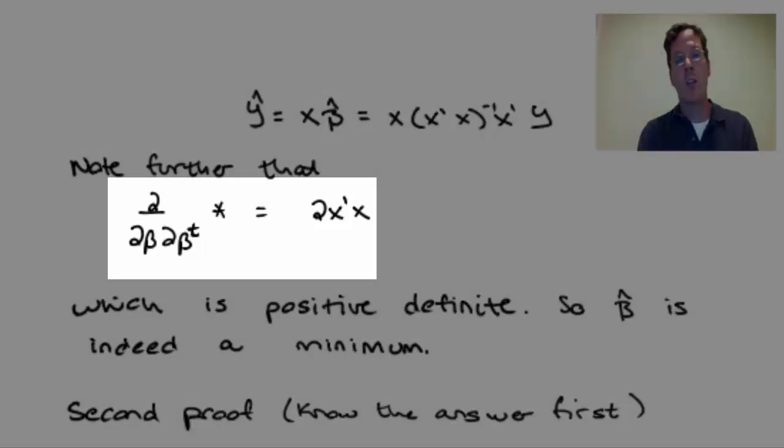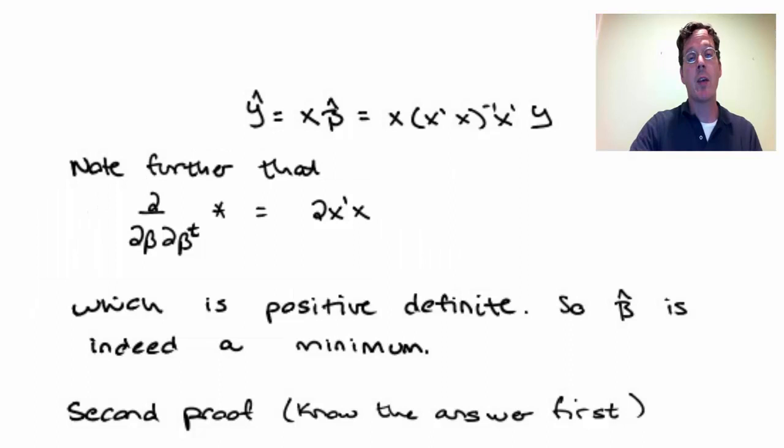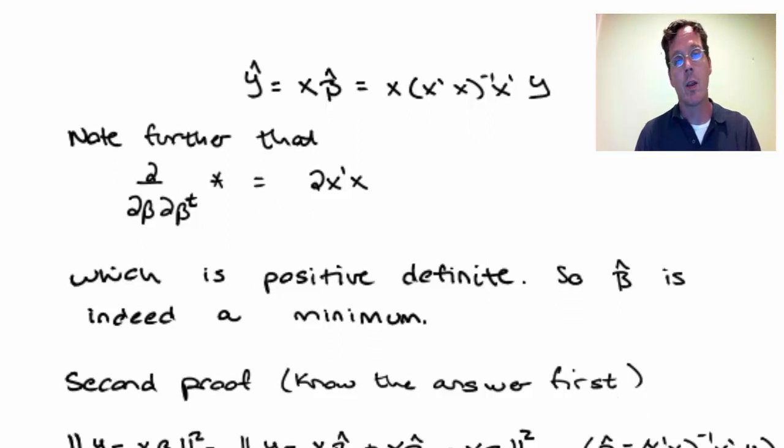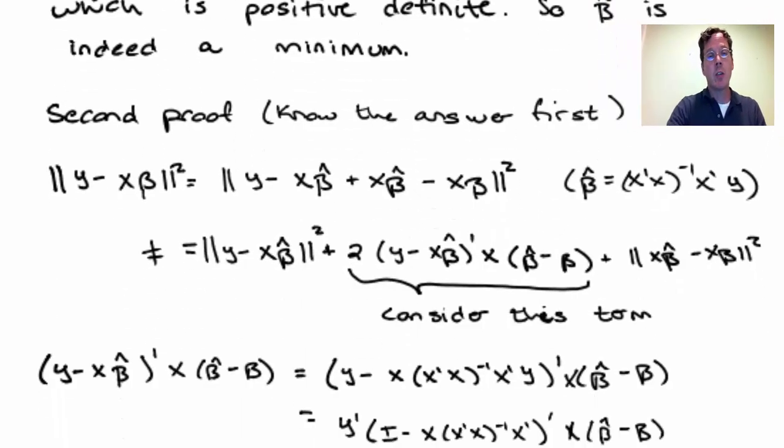Also, if we take a second derivative, we find the Hessian. We get 2x transpose x, which is a positive definite matrix. So beta hat in this case is indeed a minimum. It satisfies the second derivative condition.